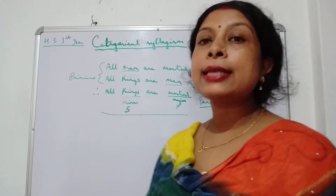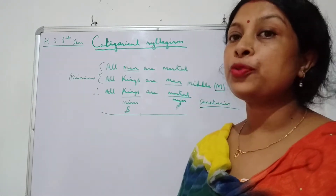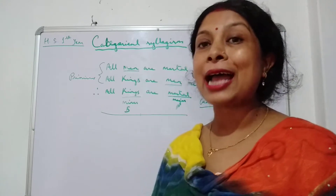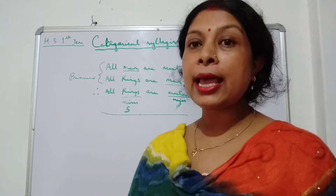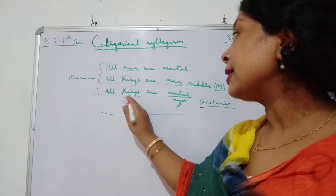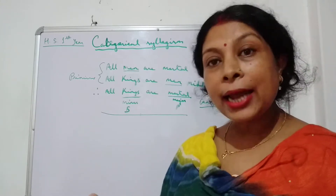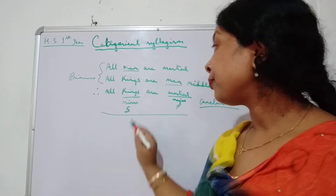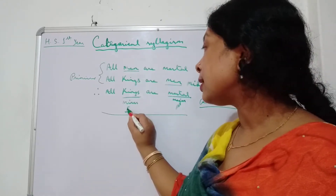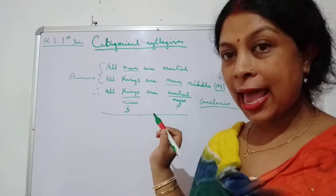Now let us come to minor term. The subject of the conclusion — a subject is that about which something is said. So which one is the subject of the conclusion? 'King' is the subject of the conclusion, so the subject of the conclusion is known as minor term. The symbol for minor term is S.